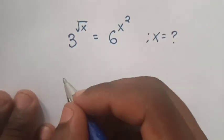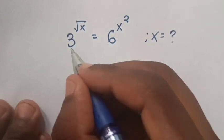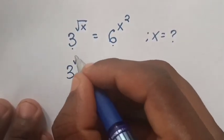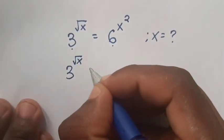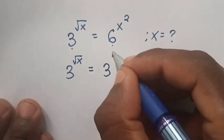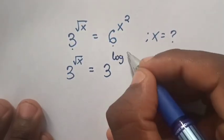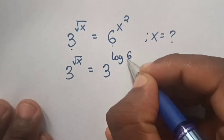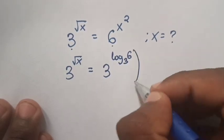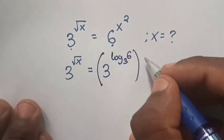We can see there's base 3 here and base 6 here. So we rewrite it as 3 power square root of x is equal to 3 power log 6 base 3, where this represents base 6.